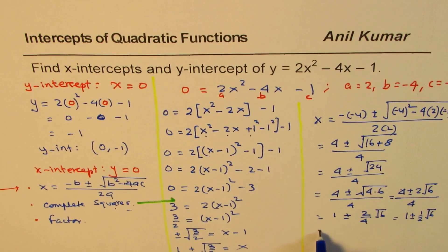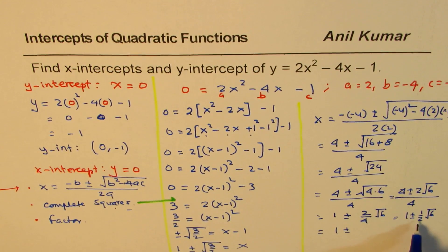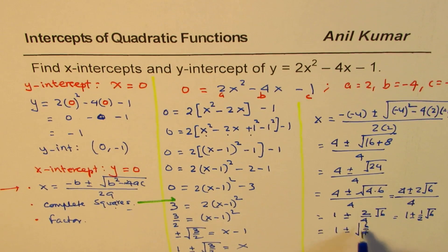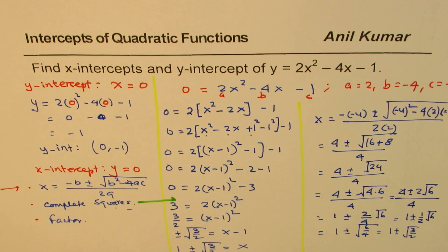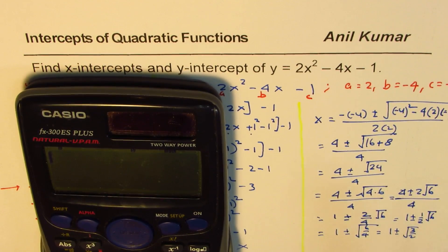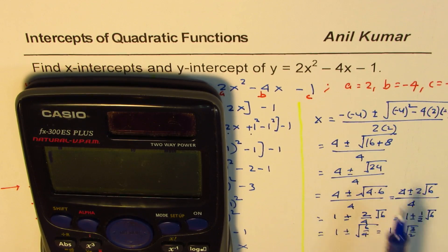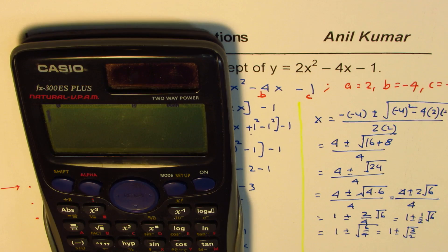Now this could be written as 1 plus minus, you take 2 inside. So it becomes square root of 6 over 4. And that is 1 plus minus square root of 3 out of 2. Well, you could use calculator. Let's use the calculator. So we'll use the calculator at any of these stages to see what the answer is.